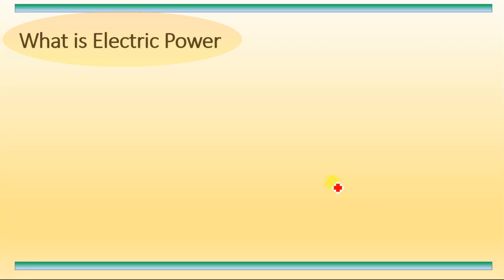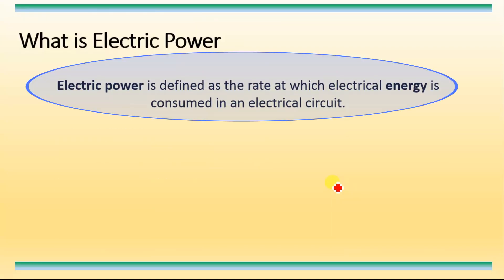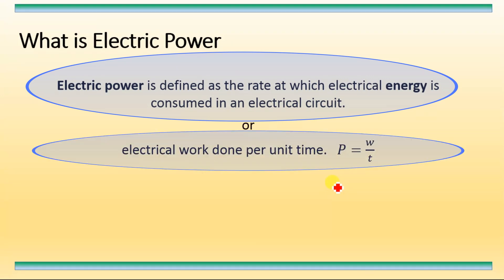Today's video is about electric power. Electric power is defined as the rate at which electrical energy is consumed in an electrical circuit, or in other words, it is the electrical work done per unit time. Electric power is denoted by P and is equal to W divided by T, where W is the work done and T is the time.